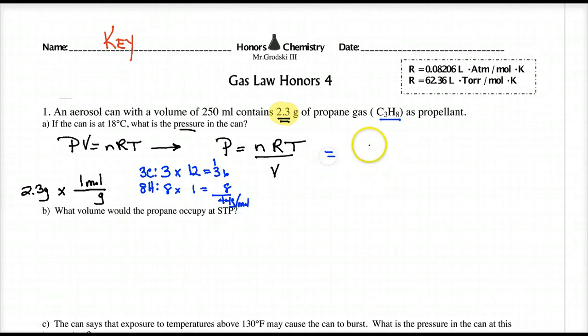So when I solve for this, I have to put that 44 grams here. That's my converting factor. And now let's solve for it. Put it in our calculator. 2.3 times one and divide by 44. And I get 0.052270, stop there, moles.